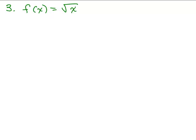But with the square root function, you can only put positive numbers underneath the square root, so x has to be greater than or equal to 0 — that's the domain. In interval notation, that's 0 to infinity.